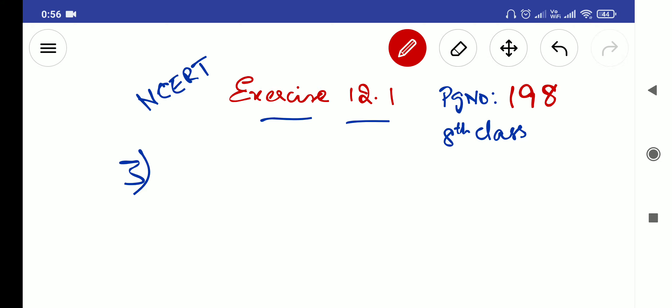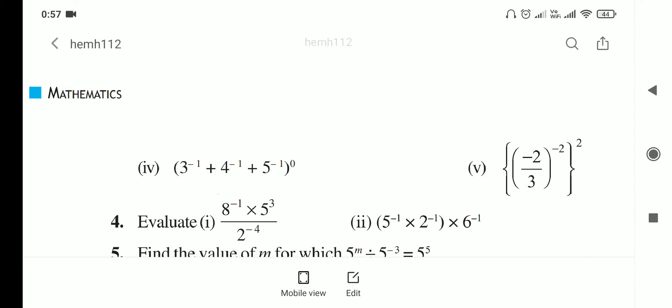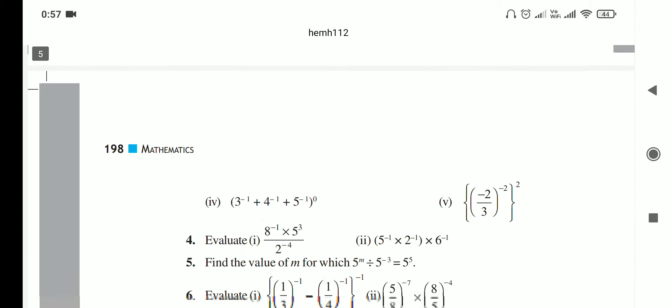This is continued. In previous videos we have done already third question till third bit. Now we are in the third question fourth bit, which is simply find the value of that one.